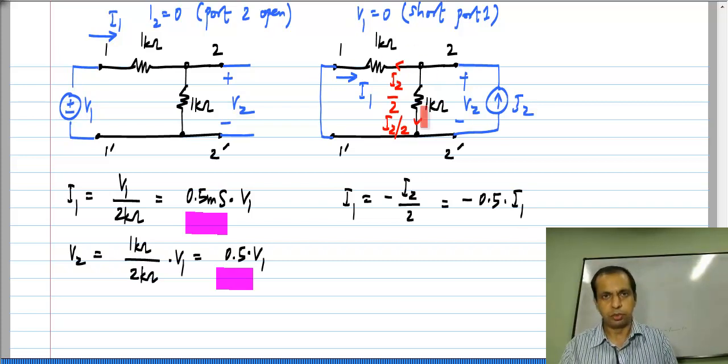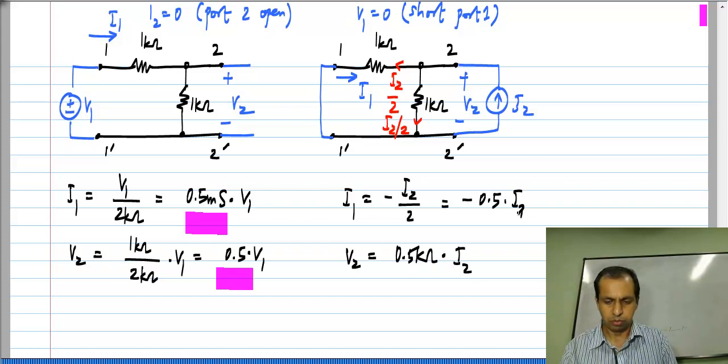The parallel combination of these two 1 kilo ohm resistors appears across I2. So, V2 is the parallel combination of two 1 kilo ohm resistors which is half kilo ohm times I2. This is G12 and this is G22.